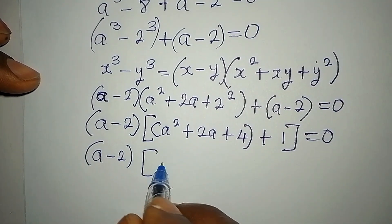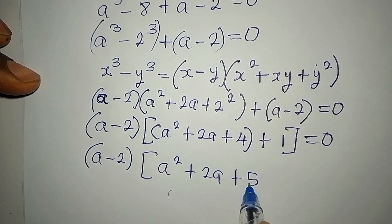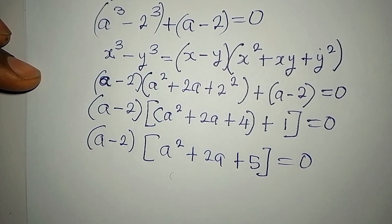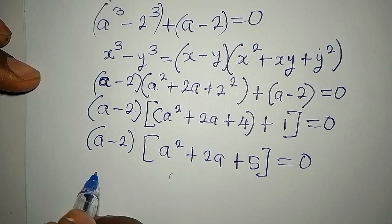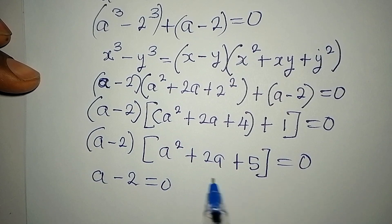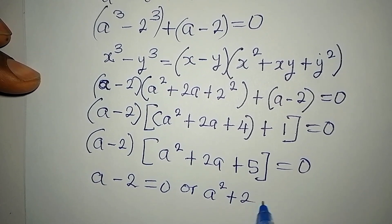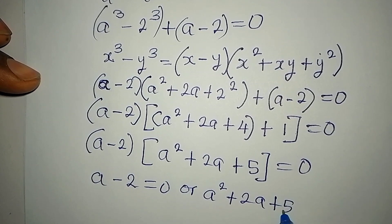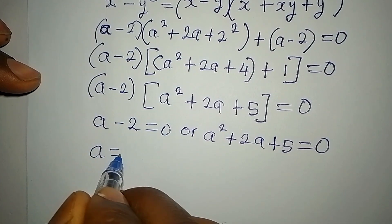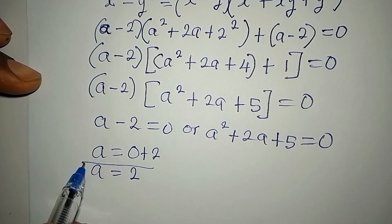At this point we apply the zero product rule. We say a minus 2 equals 0, or a squared plus 2a plus 5 equals 0. From the first factor, a equals 2. This is one of the solutions.